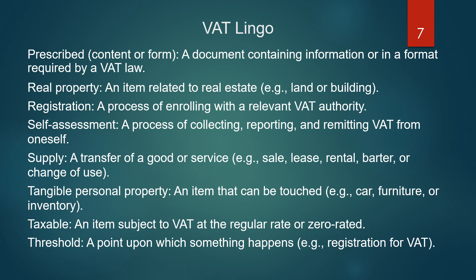Supply: a transfer of goods or service. Examples include a sale, lease, rental, barter, or change of use. Tangible personal property: an item that can be touched. Examples include a car, furniture, or inventory.